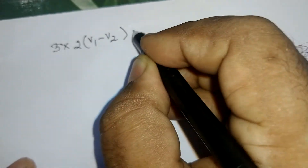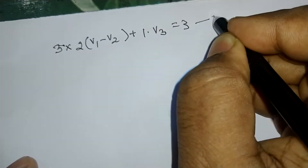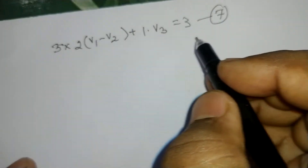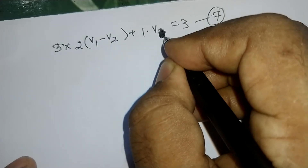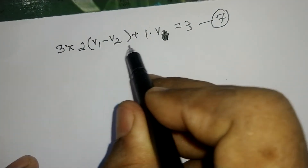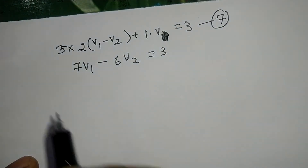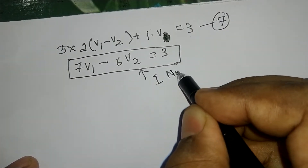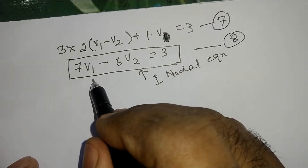By collecting the terms of V1 and V2, the final equation becomes 7V1 minus 6V2 is equal to 3. This is the first nodal equation, written in terms of node voltages V1 and V2.